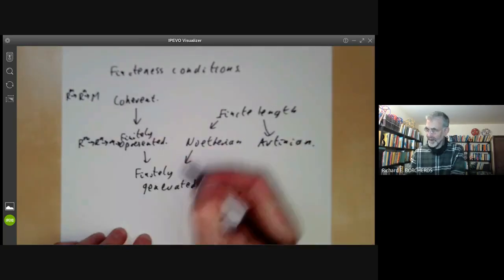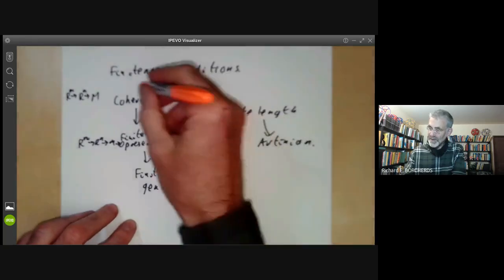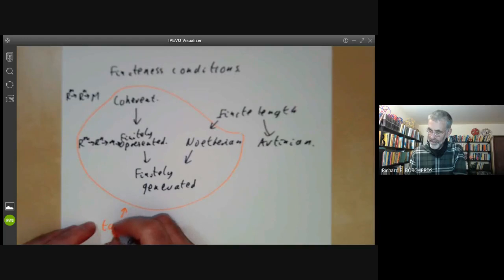So this is a summary of the more common properties of modules, sorry, the more common finiteness conditions of modules. And you can also remark that these are all equivalent over a Noetherian ring.